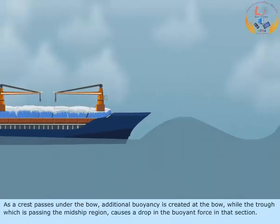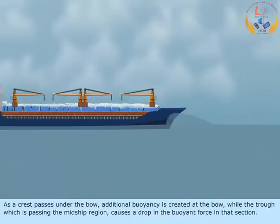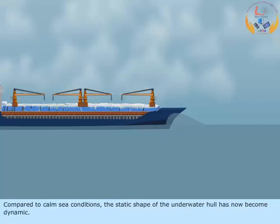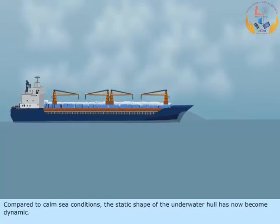As a crest passes under the bow, additional buoyancy is created at the bow, while the trough which is passing the midship region causes a drop in the buoyant force in that section. Compared to calm sea conditions, the static shape of the underwater hull has now become dynamic.